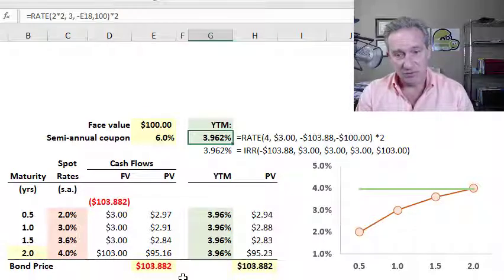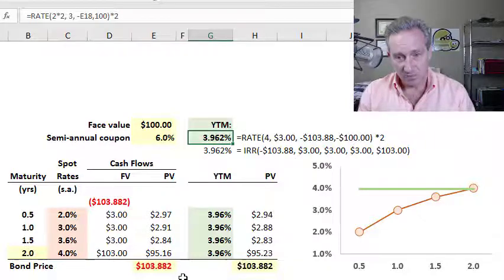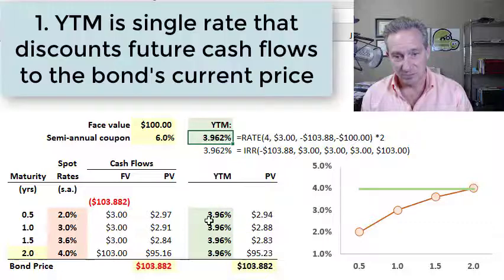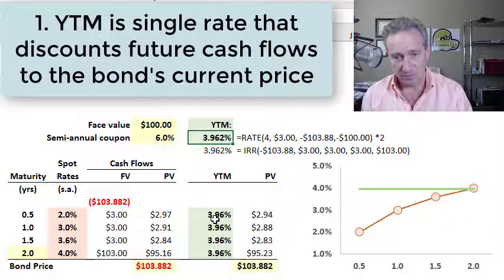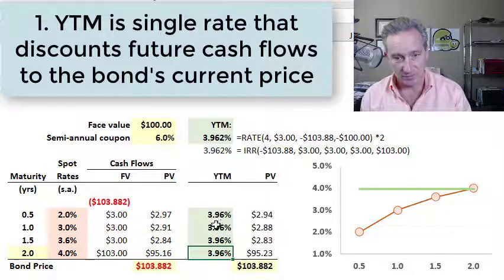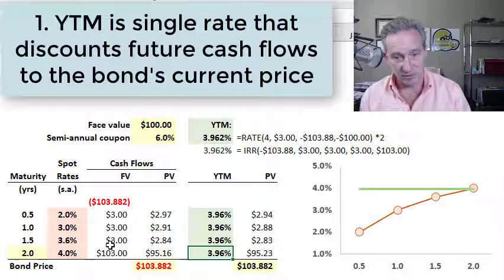In terms of interpretation, the first important point about what the yield to maturity means is illustrated here. Notice if I take the yield to maturity and use it as the single discount rate and discount the same future cash flows — after all, these are the bond's future cash flows —